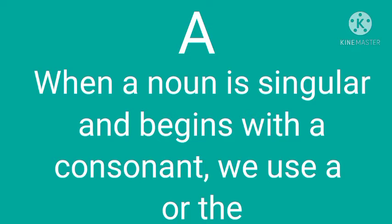और 'the' हम कब use करते हैं? जब हम किसी भी चीज़ के बारे में दोबारा बात कर रहे हैं — जैसे कि अभी हमने example में देखा था, पहले हमने ball और dog के बारे में बात की थी। Next हमने same ball और dog की दुबारा बात की, तो हमने 'the' use किया — 'the dog is playing with the ball.' इस तरह से हम 'a' और 'the' को articles में use करते हैं।